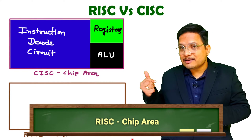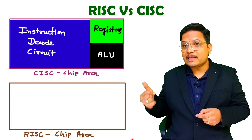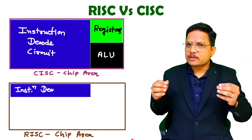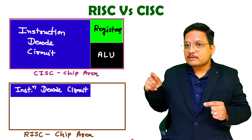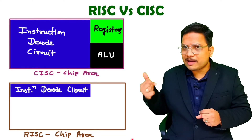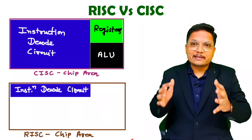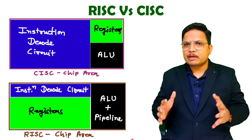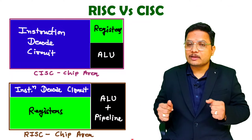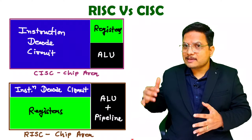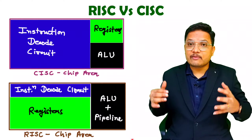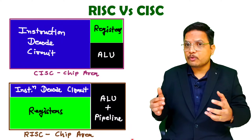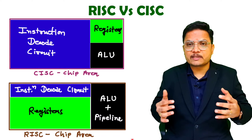As you see the RISC chip area, in that you will be observing you are having a reduced instruction set. So you are having very few instructions and those instructions are simple. The instruction decode section will be acquiring very less area. And as area is less with the instruction decode section, you will be observing large area is available for number of registers as well as a large area for the execution unit. So here you can establish efficient pipelining.